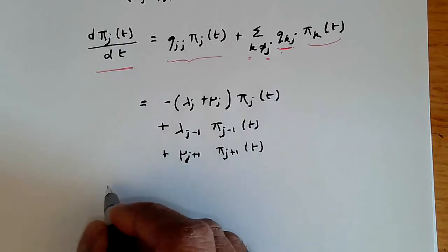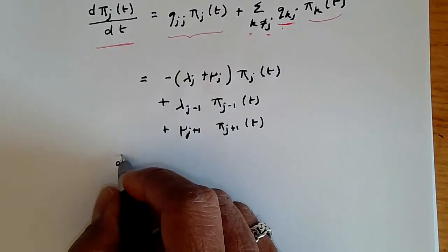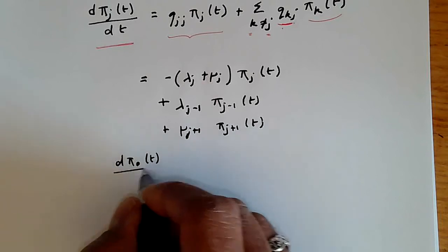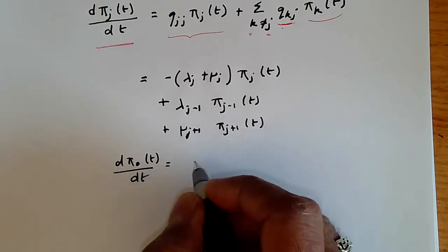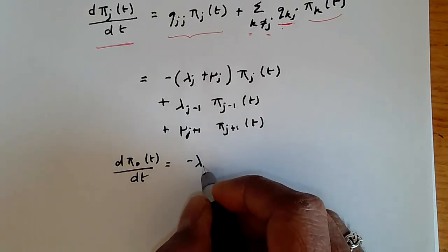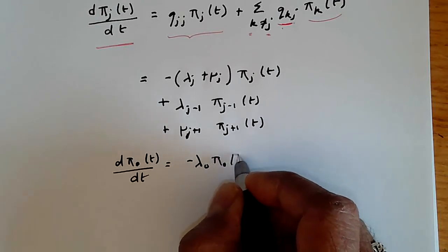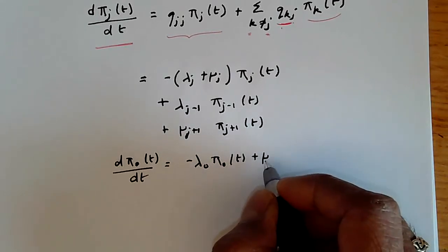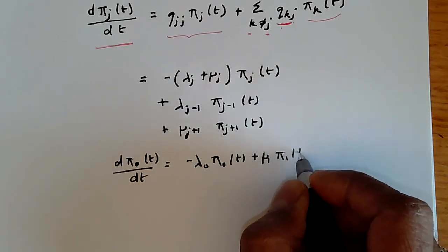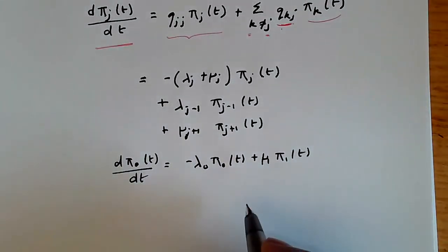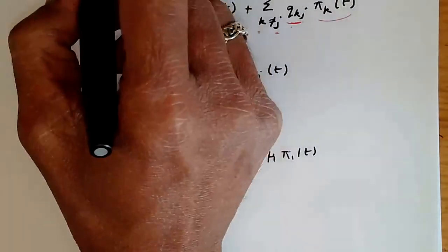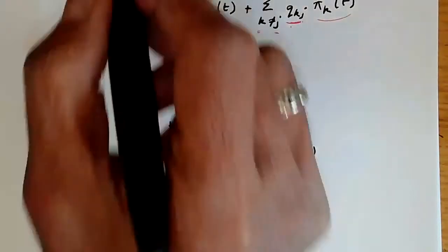And we also need the boundary condition, which is that d pi 0(t) by dt is going to be given by minus lambda 0 pi 0(t) plus mu 1 pi 1(t). That's just to account for the fact that at state 0, we don't have a departure when we have arrivals.